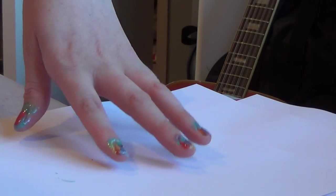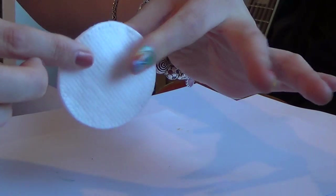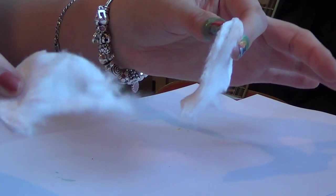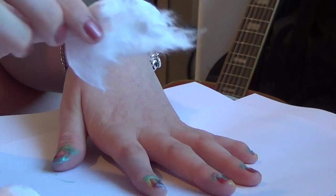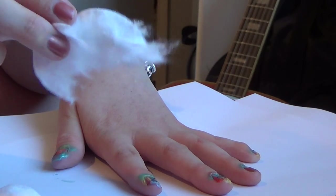Before all of this dries, you want to take a cotton pad and you want to rip it so that there's that fluffy part. And what we're going to do is we're going to kind of do a velvet nail.